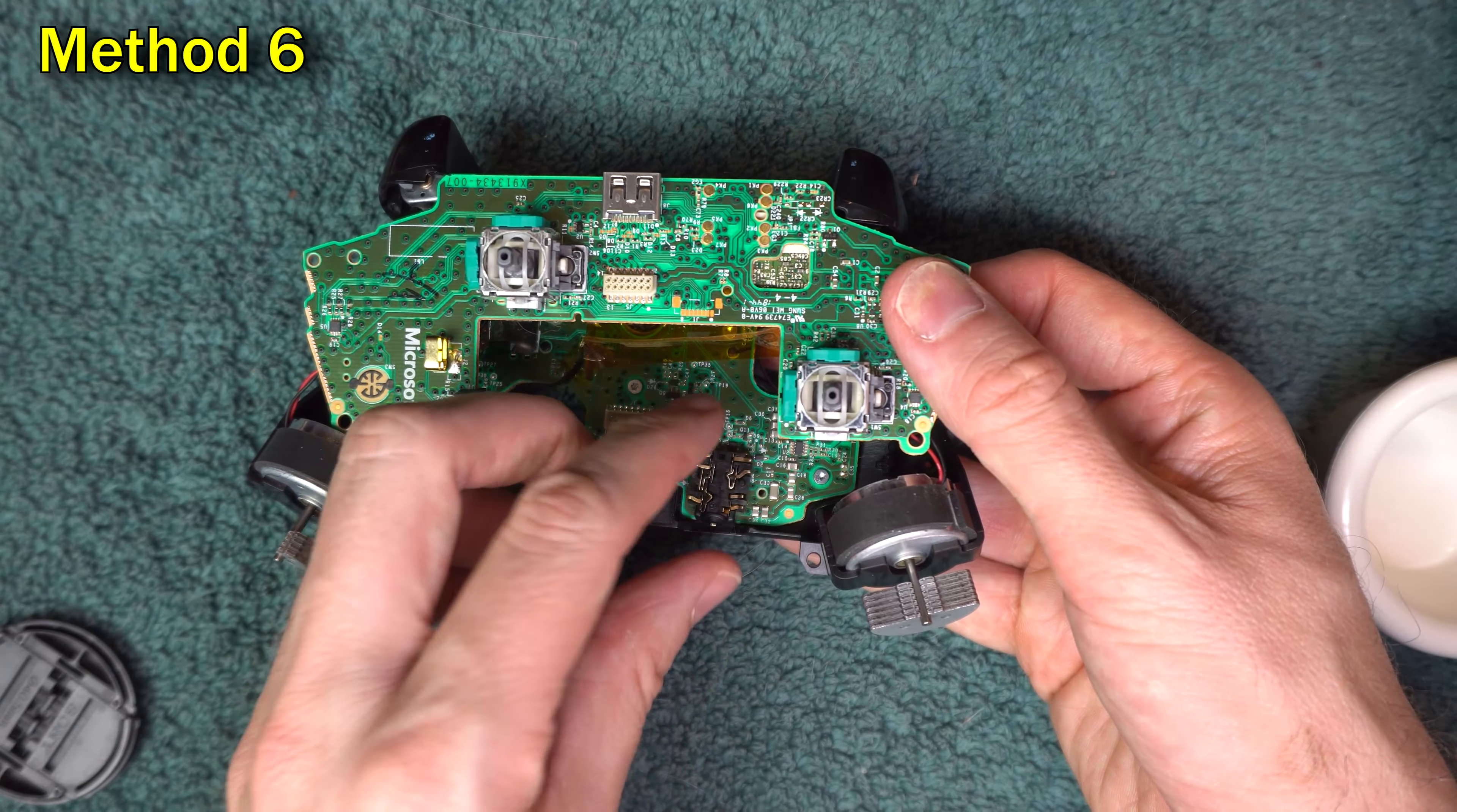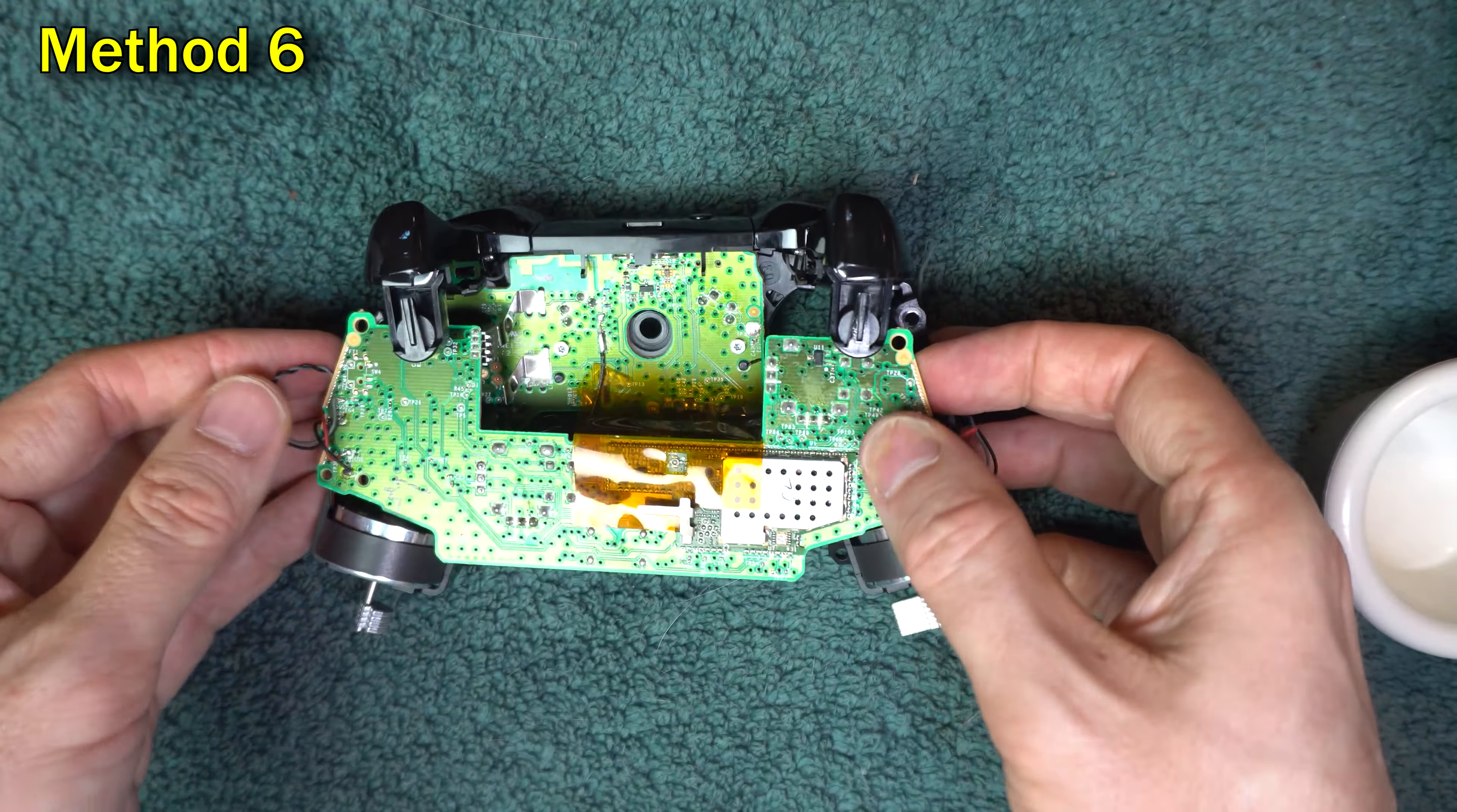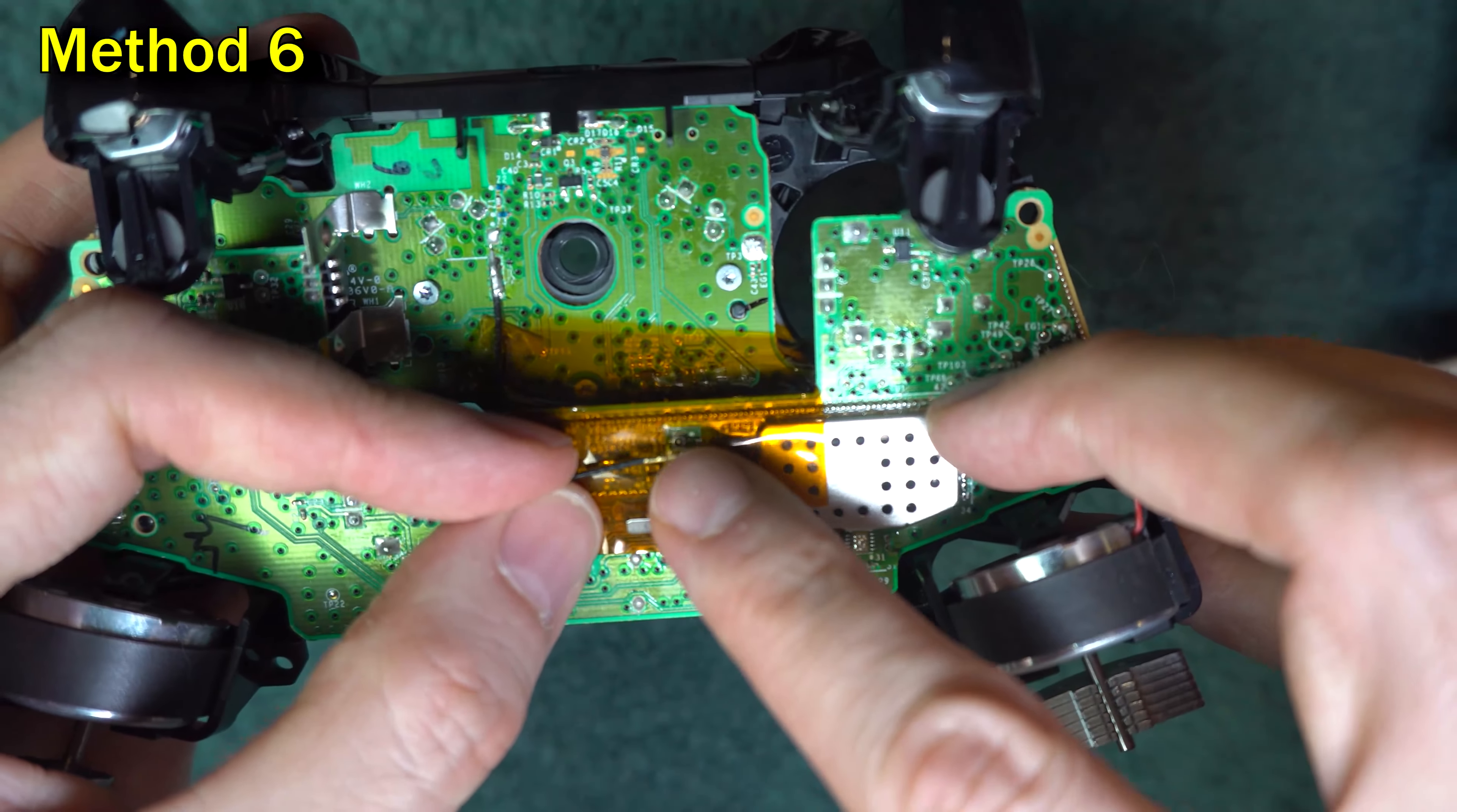If the headphone jack fell out, put it back on the board like this. And as you put it together, make sure you reattach the wire that was connected to the board.